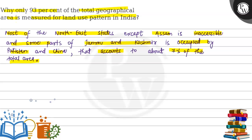Assam has a lot of accessibility. Jammu and Kashmir — parts of it are held by Pakistan and China — together make up 7% of the total geographical area. This is the reason why only 93% of the total geographical area is measured for the land use pattern in India. I hope you understood it well. Best of luck.